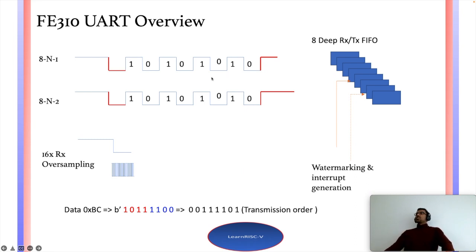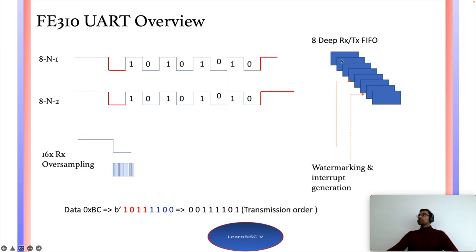These are the features of UART in FE310. UART in FE310 can be configured in two modes: 8N1 and 8N2, which means 8 bits, no parity, and one or two stop bits. It has a FIFO of 8 — so 8 separate byte FIFO for transmission and 8 separate byte FIFO for reception. We won't be covering the receive part; I will just be transmitting data.